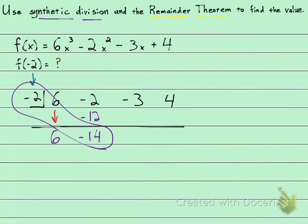Multiply. Negative 2 times negative 14 is a positive 28. And combine. Negative 3 plus 28 is 25.